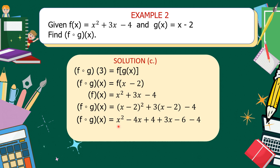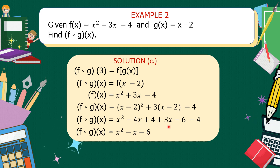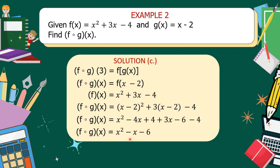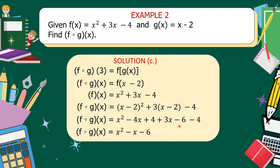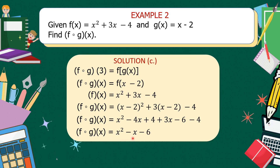So x squared has no similar term — just copy x squared. Then negative 4x is similar to positive 3x: negative 4x plus positive 3x is equal to negative x. Then for constant terms: positive 4 plus negative 6 is negative 2, then negative 2 plus negative 4 is negative 6. So f circle g of x is equal to x squared minus x minus 6.